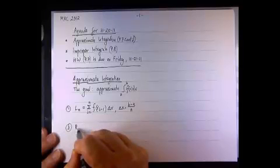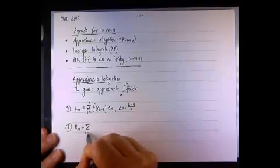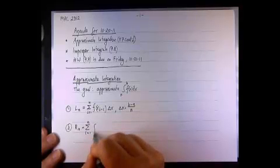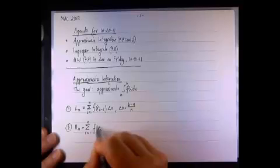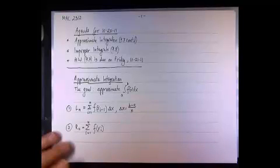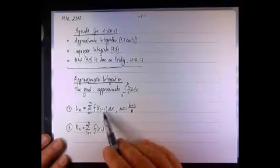The next technique was the right-hand point, again the sum from 1 to n. Here we take f of x sub i - on the interval bounded by x sub i minus 1 and x sub i, we choose the right-hand side.